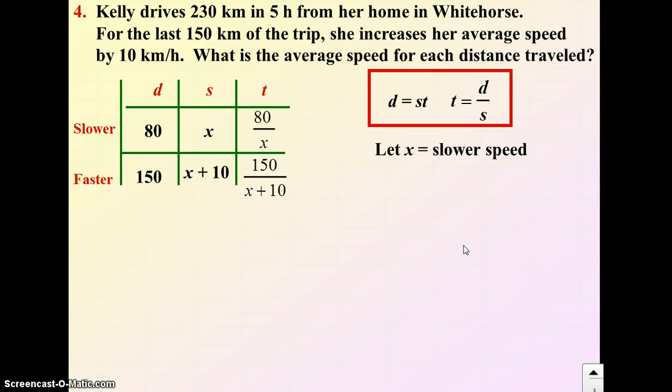We have our chart completed. We are now able to write an equation to satisfy and solve the problem. So total time is supposed to equal five hours. So slower time plus faster time should equal the total time. Here's our slower time, 80 over x. Here's our faster time, 150 over x plus 10. The total time is supposed to be five hours. So there's our equation.